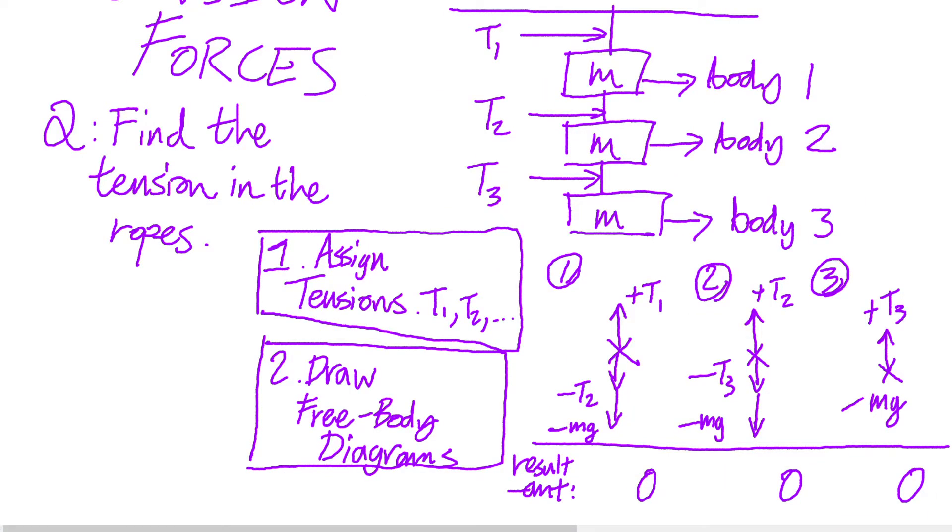For an explanation of the free body diagram, such as the diagram for body 2, note that there is a rope number 2 above body 2 which is pulling up on body 2 with a force of its own tension, t2. Likewise, there is a rope below body 2 pulling down on body 2 with the force of its own tension, t3, a force minus t3. And finally, body 2 itself has a weight of mg. That's why you get the free body diagram having these three forces, t2 upwards, t3 downwards, and mg downwards.